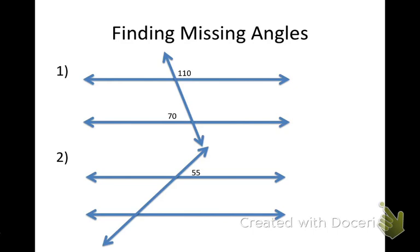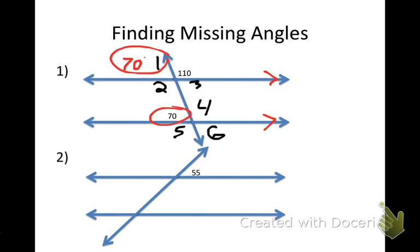Knowing what we just learned, if I have these two parallel lines and I label the angles 1 through 6, and I know one angle is 110° and another is 70°, I can find the missing ones. Angle 1 is 70° — those are corresponding angles. And angle 2 is 110° because those are vertical angles, and vertical angles are always congruent.